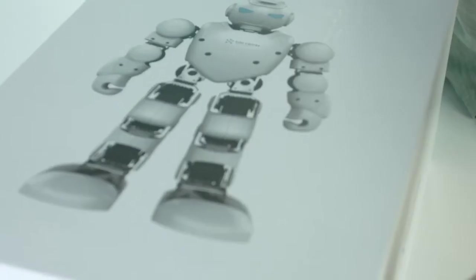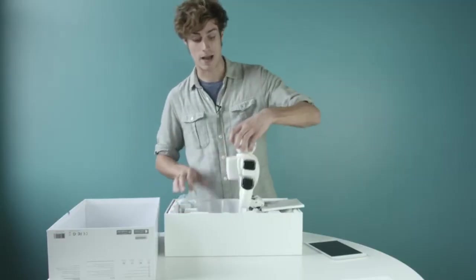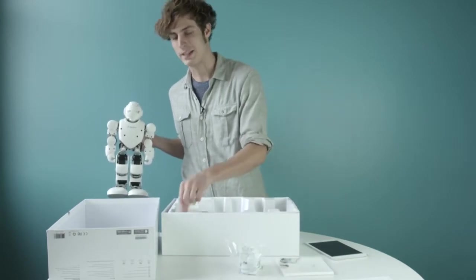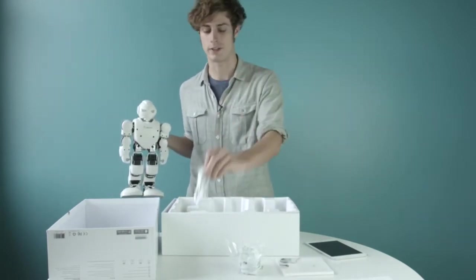To get started, open up the strong reusable box. Find Alpha One. Inside the box, you'll also find a user guide, a charger, and a USB cord to hook Alpha One into your computer.